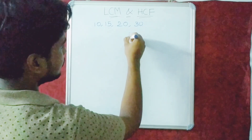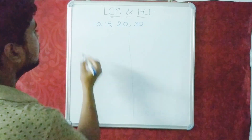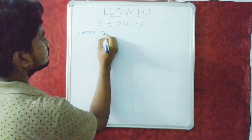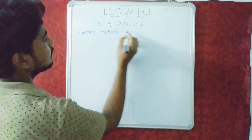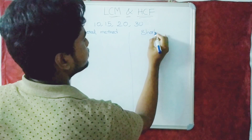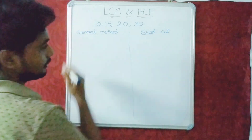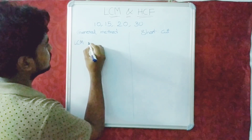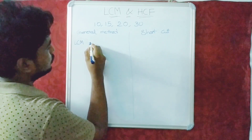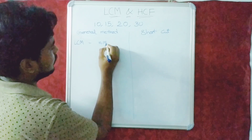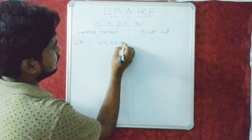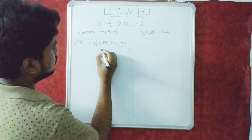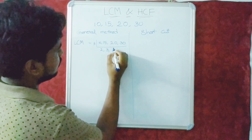Let's see the difference now. Let's do the general method and shortcut here. First I'll try to find the LCM of the numbers 10, 15, 20, 30 using the division method, taking common factors 5, 2, 3, and so on.